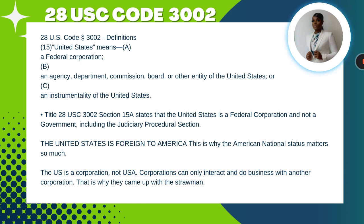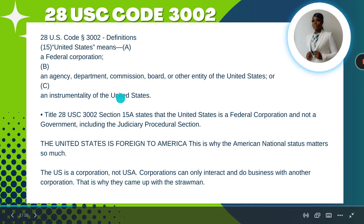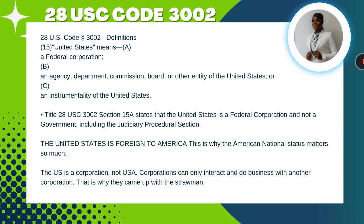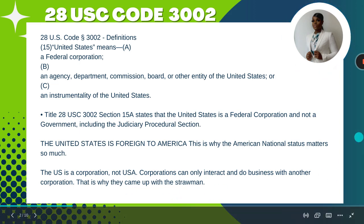This is why when you are going through the process of getting your American national status, this matters so much. With the United States being foreign to America, you're from the land — from North America. However, when they incorporated the United States, they made it a corporation. Corporations can only interact and do business with another corporation, and this is why they came up with the straw man. We'll get into that a bit later.